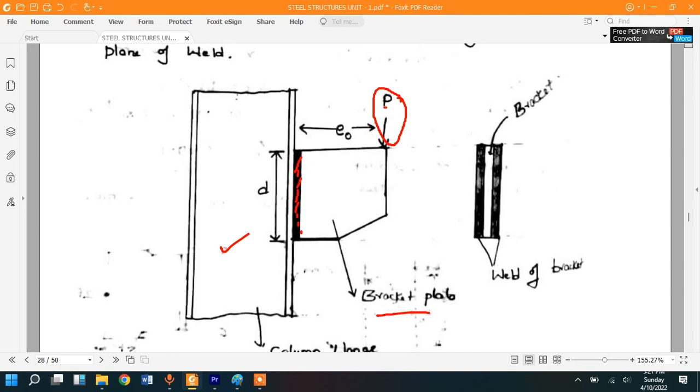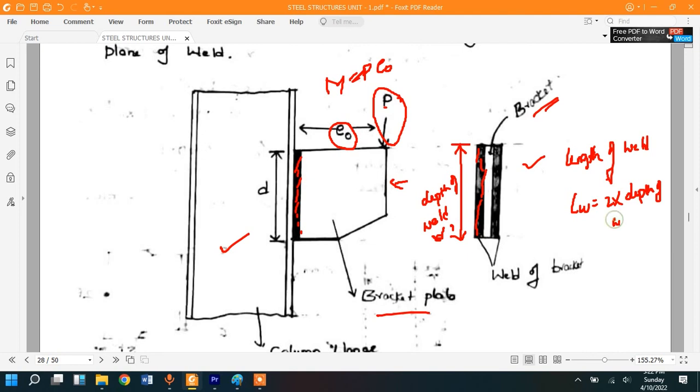See, this load always acts at an eccentricity. This eccentricity is measured from the weld up to the load, that is E naught, and therefore the moment due to this is equals to P into E naught. So now this is the other side view. This is the bracket plate and the weld is done on both sides. This is what we call as depth of weld, D. This is the depth of the weld, but what is the length of weld? From this figure we can say that length of weld Lw is equals to two times the depth of weld. So 2 into D equals Lw.